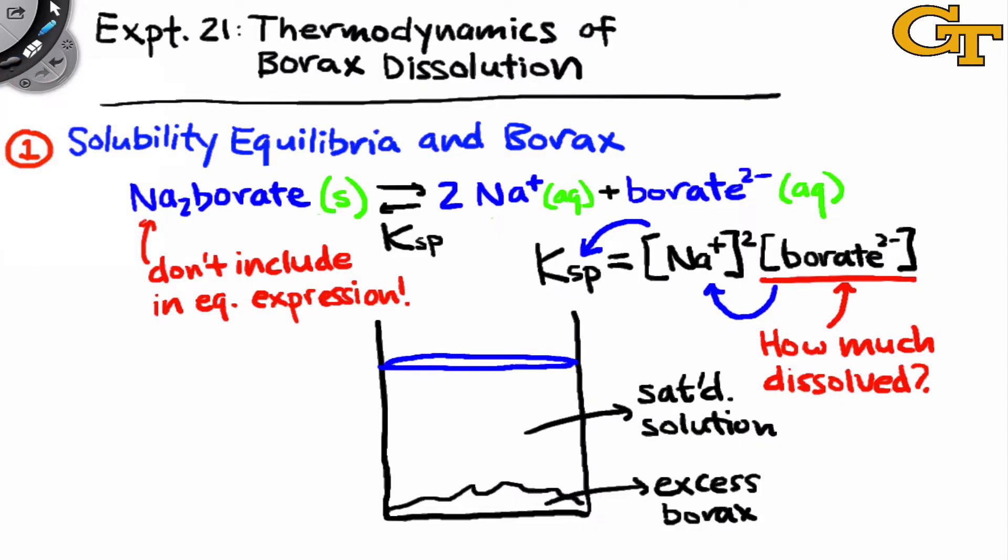So we don't necessarily have to study the entire saturated solution. We can take out what's called an aliquot from the solution, something like only 5 or 10 milliliters of liquid. The concentrations of sodium and borate in that tiny aliquot are the same as the overall concentration in the entire saturated solution because concentration is intensive. It doesn't depend on the volume of the solution and it's uniform throughout.